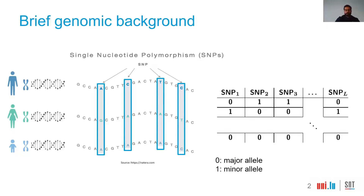In the SNPs, we can find two types of alleles. We have major alleles, which are the most common allele in a population and are represented by zeros. And we have minor alleles, which are the less common allele in a population and are represented by ones. On the right side, we have the digital representation of the human DNA, with individual IDs, SNP IDs to identify the positions, and the sequences of the alleles of each individual.